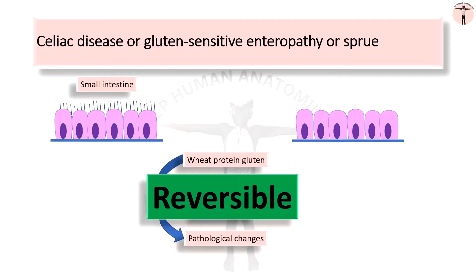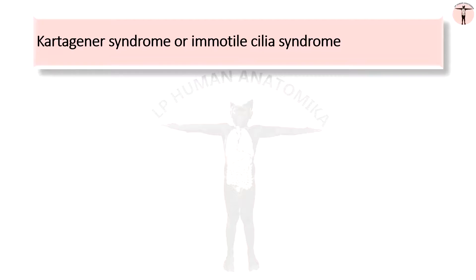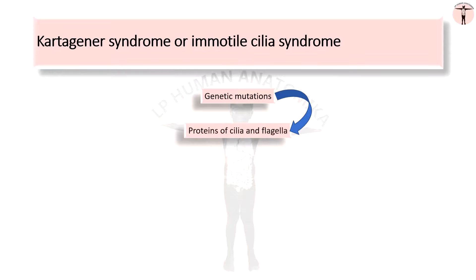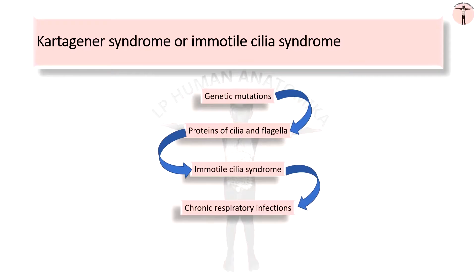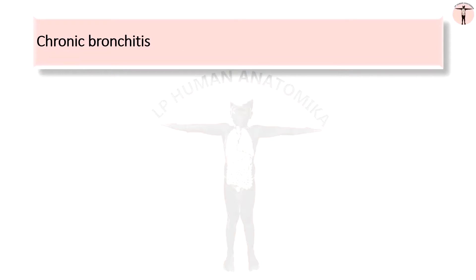Most diseases are reversible if we change our lifestyle. Several genetic mutations, like Kartagener syndrome or immotile cilia syndrome, have been described in the proteins of the cilia and flagella. They are responsible for immotile cilia syndrome, whose symptoms include chronic respiratory infections caused by the lack of cleansing action of cilia in the respiratory tract, and immotile spermatozoa causing male infertility.